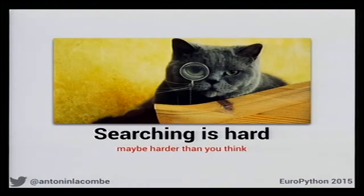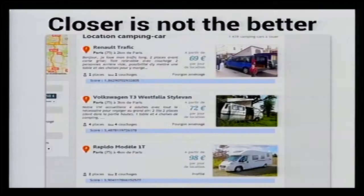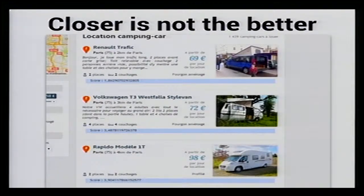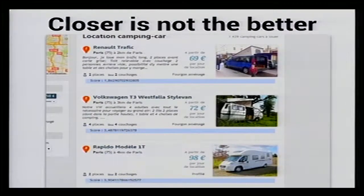But searching is hard — maybe harder than you think. Let's see what happens in the search results. Here is an example search for Paris using this algorithm. As you can see, the first camper is at 2 kilometers from Paris, the second at 3, and the third at 4 kilometers. The first is a van, the second is another van, and the third is a proper camper. There are no reviews for any of them, and worse, there is no description for the third vehicle.